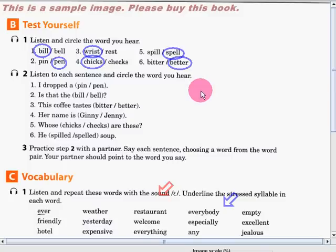Okay! Let's see if you can answer exercise number two. In this exercise, you have to listen to each sentence and circle the word that you will hear. Okay! Let's do it now! Number one. I dropped a pen. Very good! I said, pin!